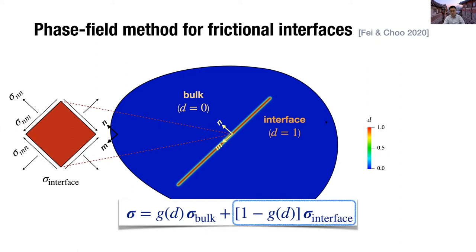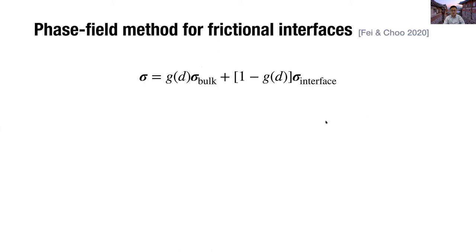So here, the second term on the right-hand side is new in our method, because this is zero in standard phase field modeling. Then, how can we calculate the bulk and interface stresses?